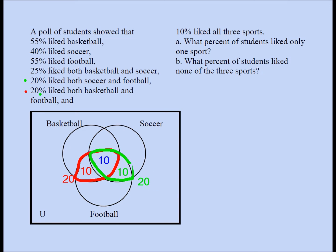For basketball and soccer: 25% liked both basketball and soccer, so the two numbers in that overlap region should add up to 25. Some of them may have also liked football — that piece is already 10. So this region has to be 15, because 10 plus 15 equals 25.